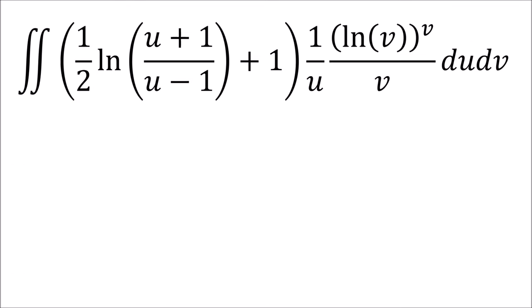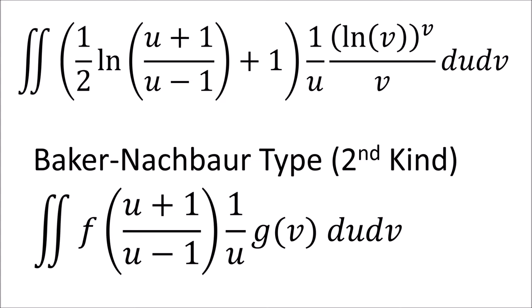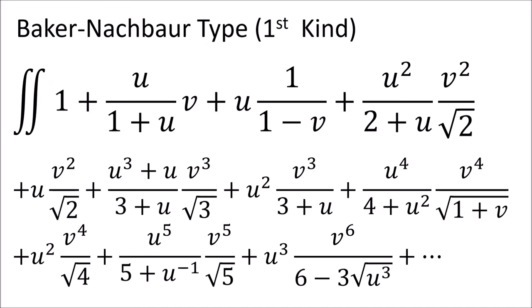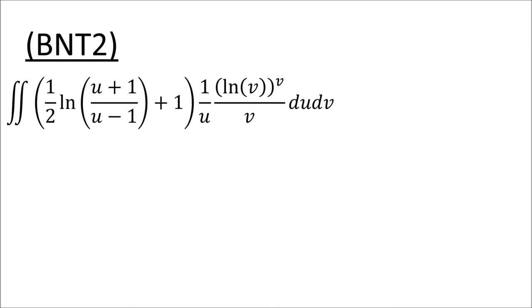Okay, so now this is great, because now this integral is of Baker-Nochbauer type of the second kind. Now we could convert it to an integral of Baker-Nochbauer type of the first kind, but that would turn it to an infinite series, and the only way to solve that is with the Keter polynomials, and I just don't really want to go down that road. So we're going to stick with the BNT2 integral.